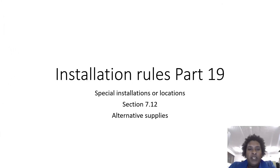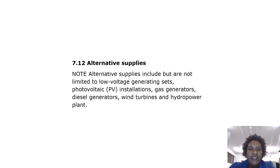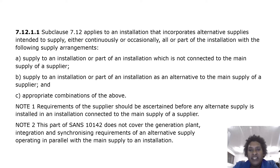Welcome to our Installation Rules Part 19 of Paper 1 video, which focuses on special installation Section 7.12 relating to alternative supplies. Alternative supplies include but are not limited to low voltage generating sets, PV installations, gas generators, diesel generators, wind turbines, and hydropower plant.